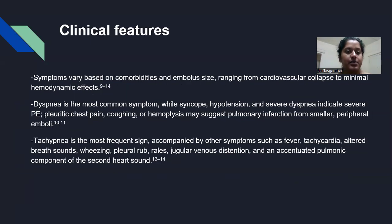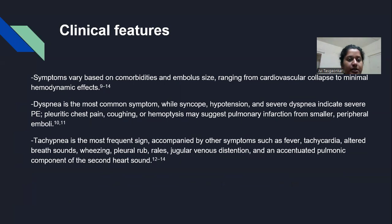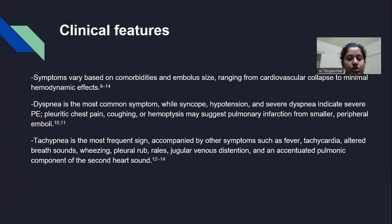Clinical features: symptoms vary based on comorbidities and embolism size, ranging from cardiovascular collapse to minimal hemodynamic effects. Dyspnea is the most common symptom, while syncope, hypotension, and severe dyspnea indicate severe PE. Tachypnea is the most frequent sign, accompanied by other symptoms such as fever and tachycardia.